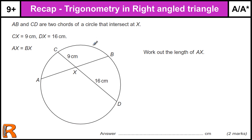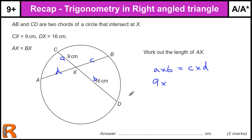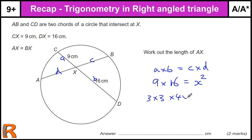Okay, this is a new one for circle theorem enthusiasts — we've got the intersecting chord theorem, where A times B equals C times D, and we want to work out the length of D. We're told CX is 9 and DX is 16, and AX and BX are the same. So that gives us 144, and X equals 12.